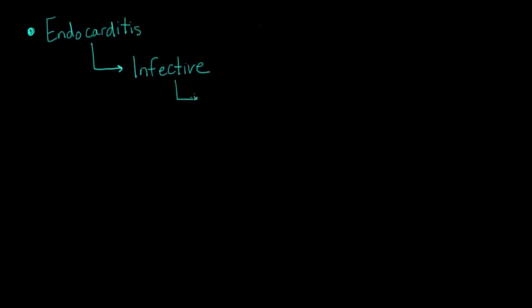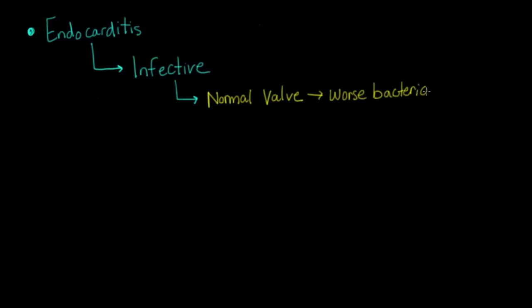There are different ways this can happen. You can get an infection of a completely normal valve — the way this happens is you have a bacteria that's really bad, bad enough that it can infect a normal valve. This is something like Staph aureus.